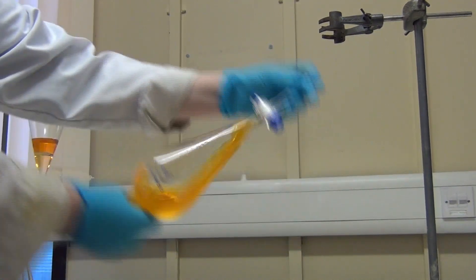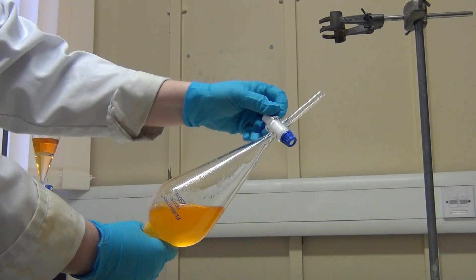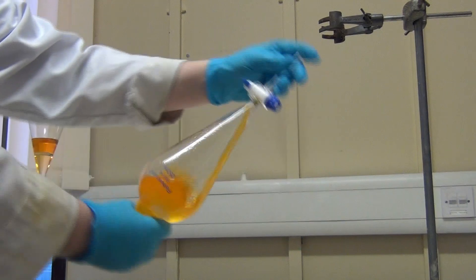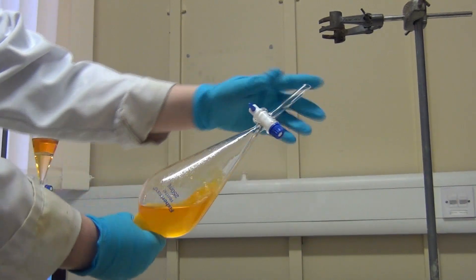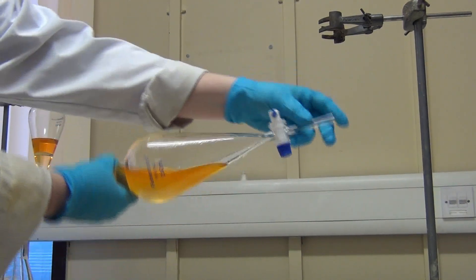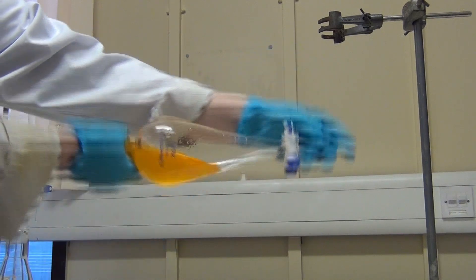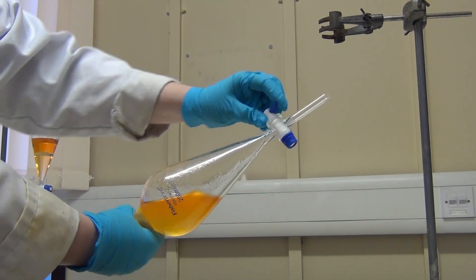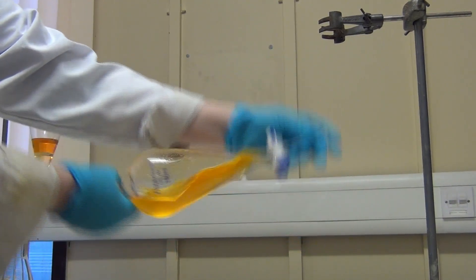Then, using both hands, invert the funnel two to three times before opening the tap to release the pressure again. To ensure maximum mixing and maximum separation, you should repeat the process of two to three inversions, followed by the opening of the tap another five to ten times.